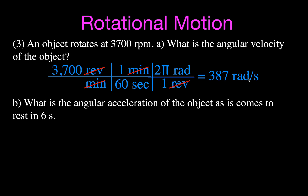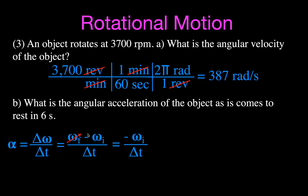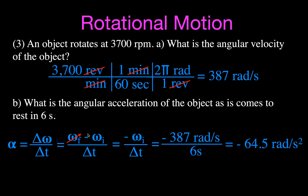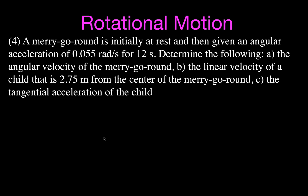Next, the angular acceleration: the object starts at 387 radians per second and comes to rest in 6 seconds. Angular acceleration equals change in angular velocity divided by time. Since the final velocity is zero, it's minus the initial angular velocity divided by time: negative 387 divided by 6 gives minus 64.5 radians per second squared. It's negative because the object is slowing down.